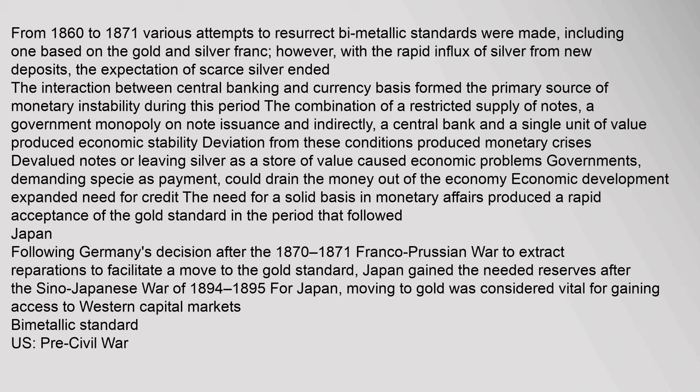From 1860 to 1871, various attempts to resurrect bimetallic standards were made, including one based on the gold and silver franc. However, with the rapid influx of silver from new deposits, the expectation of scarce silver ended. The interaction between central banking and currency basis formed the primary source of monetary instability. A restricted supply of notes, a government monopoly on note issuance, and a single unit of value produced economic stability. Deviation from these conditions produced monetary crises, and the need for a solid monetary basis produced rapid acceptance of the gold standard in the period that followed.